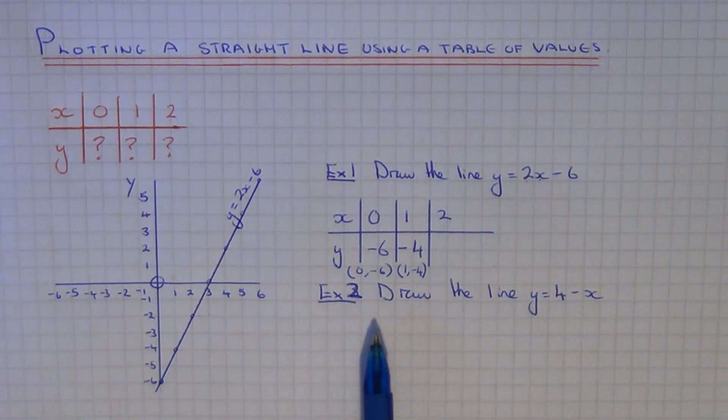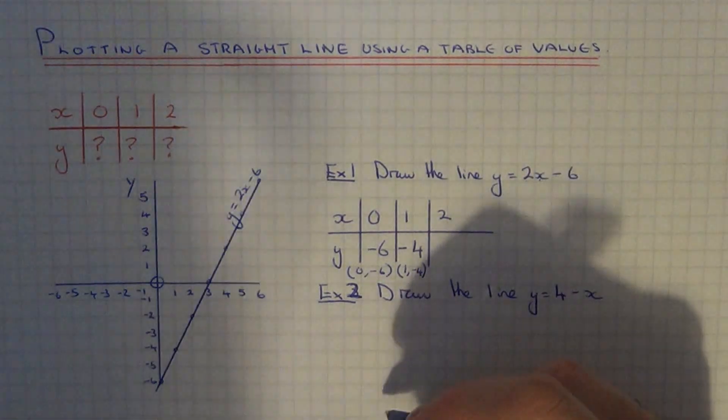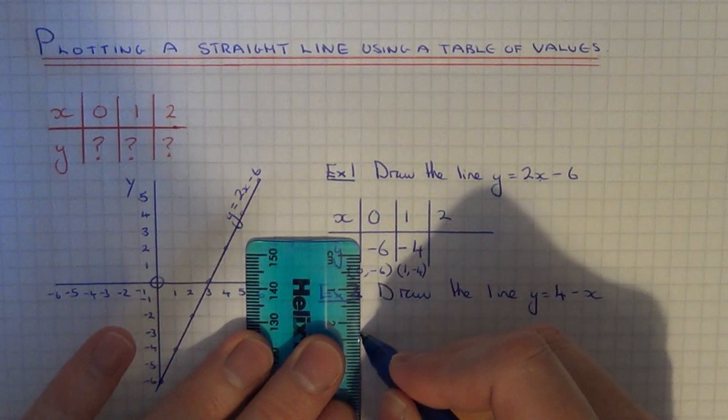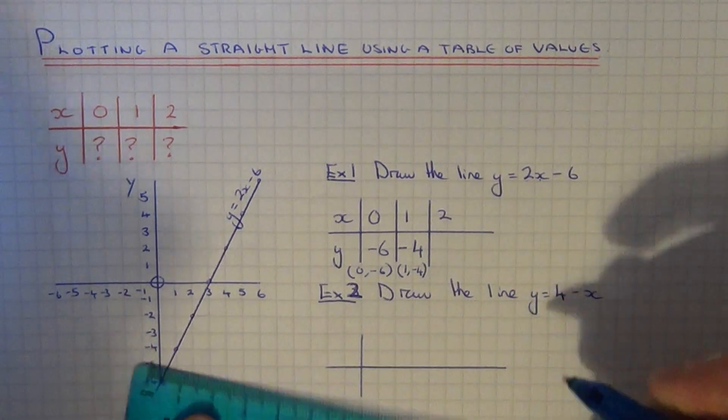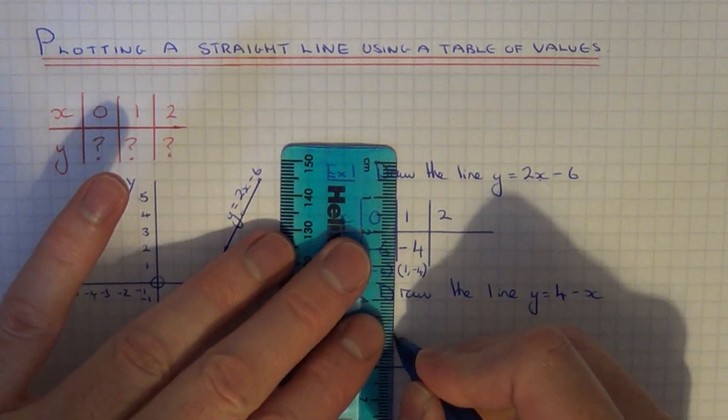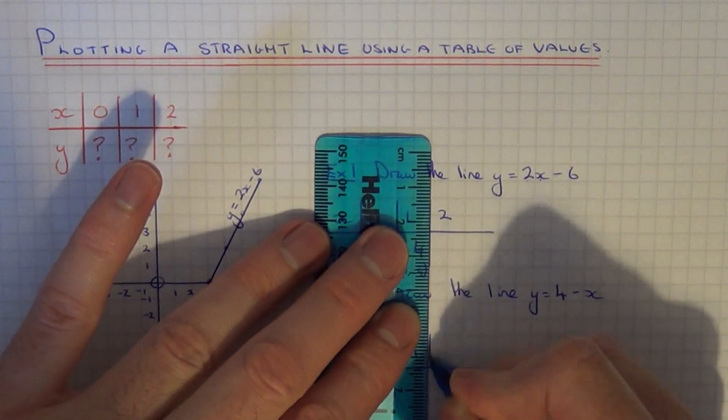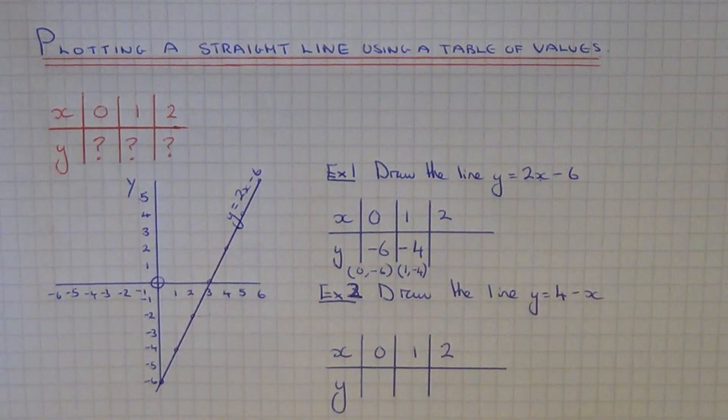So example 2. This time we've got to draw the line where y equals 4 minus x. So again, let's do a table of values. The x-coordinates I'm going to choose are 0, 1, and 2 again. So we need to work out the y-coordinates.